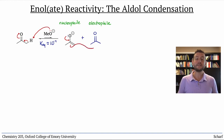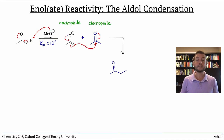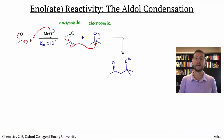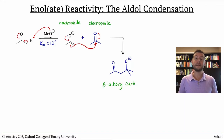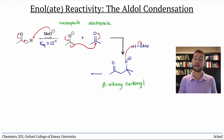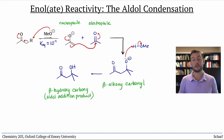The enolate reacts at carbon, donating electrons into pi star CO of the carbonyl compound. This makes a new bond between the alpha carbon of the nucleophile and the carbonyl carbon of the electrophile. The result is a beta-alkoxycarbonyl, which can pick up a proton from the solvent to make a beta-hydroxycarbonyl, or aldol addition product.